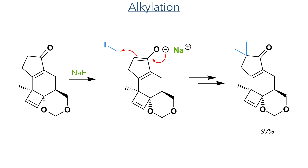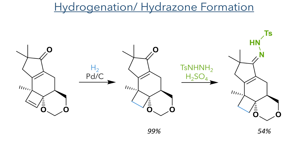With the desired enantiomer now isolated and re-oxidised, it was alkylated using sodium hydride to form an enolate which reacted with methyl iodide. This alkylation occurred twice to produce the product in a 97% yield. This was then hydrogenated using a palladium catalyst and hydrogen gas, which selectively reduced the cyclobutene ring in a 99% yield without reacting with the other alkene present, which is conjugated with the carbonyl group and thus has lowered reactivity.